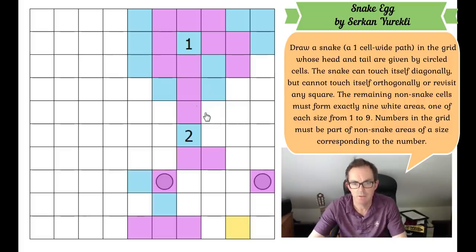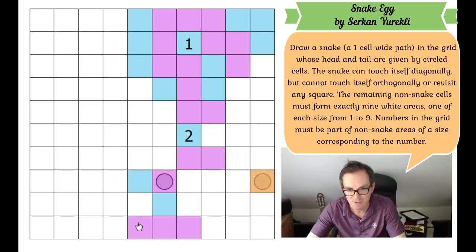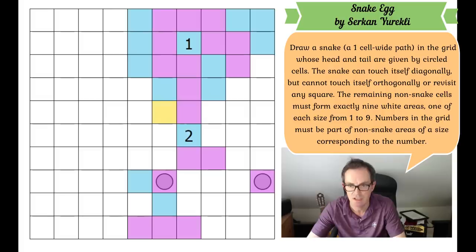Which direction does this turn? If it turns right, we've now got two snake ends here and two snake ends here — and we can only get out once, so this whole area would be isolated. So this cannot possibly turn right; it has to turn left, which makes that cell blue.